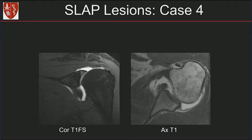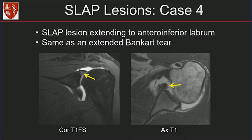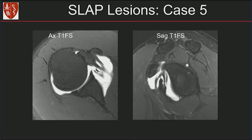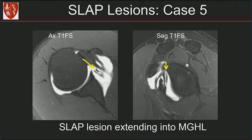Another case: coronal T1 fat-suppressed image on the left shows abnormal high signal in the superior labrum. The axial T1 image on the right shows the tear involves the antero-inferior labrum as well — this is a SLAP lesion extending into the antero-inferior labrum, which is the same as an extended Bankart tear. Just describe the tear and exactly which quadrant it's in. Another case on coronal and axial MR arthrogram images shows separation of the superior labrum from the glenoid, a small cyst filling with contrast. Going further down, axial and sagittal T1 fat-suppressed images show abnormal contrast going into the MGHL — this is a SLAP lesion extending into the MGHL.